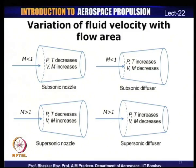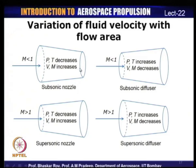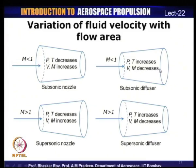For a nozzle with subsonic inlet Mach number (decreasing area): static pressure and temperature decrease along the nozzle, velocity and Mach number increase — this is a subsonic nozzle. For increasing area with M < 1 at inlet: static pressure and temperature increase, velocity and Mach number decrease — this is a subsonic diffuser.